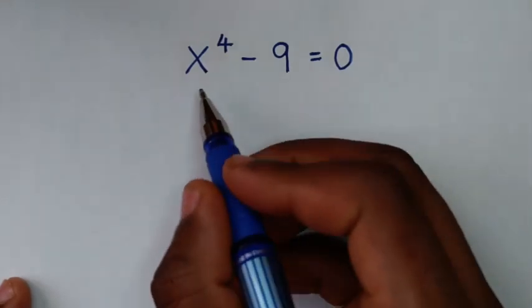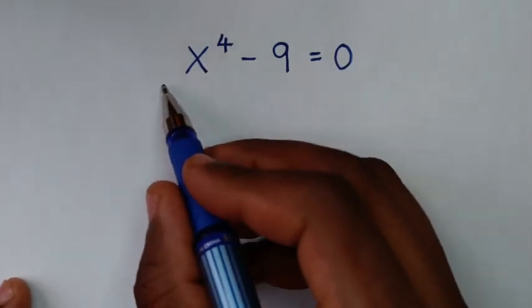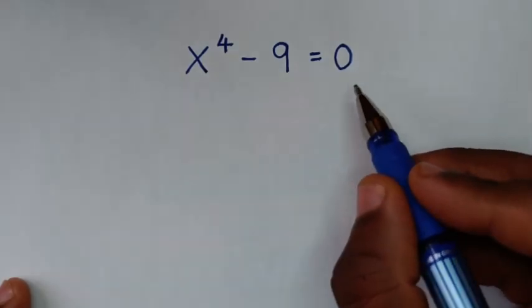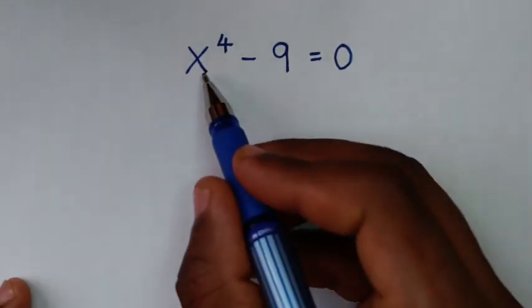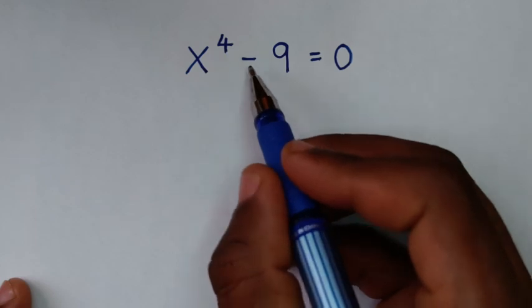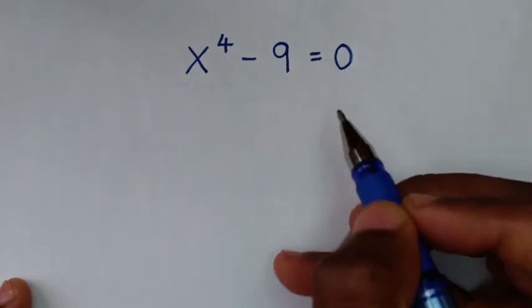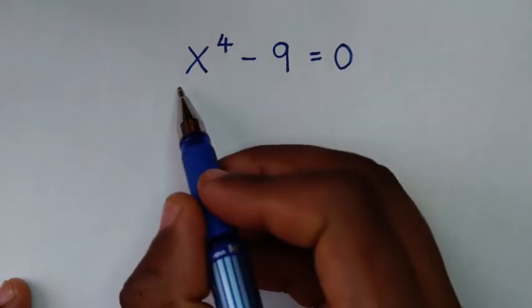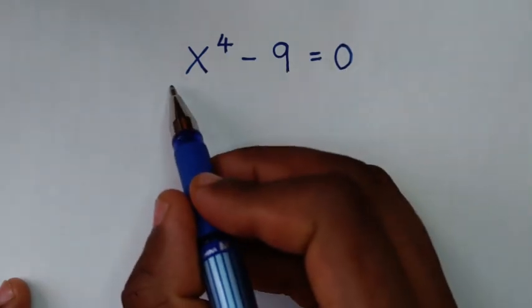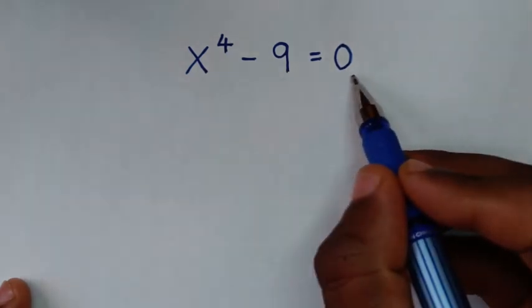Hello, you are welcome to solve this math problem, which is x to the power 4 minus 9 is equal to 0. We need to find the values of x from this equation.